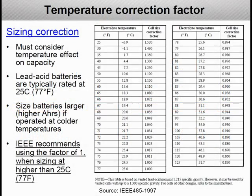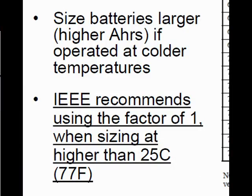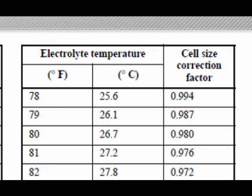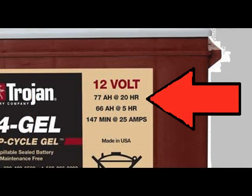For example, Correction Factor for 80 degrees Fahrenheit is 0.98. They're saying don't do the multiplication with this number, just stick with your original battery size.